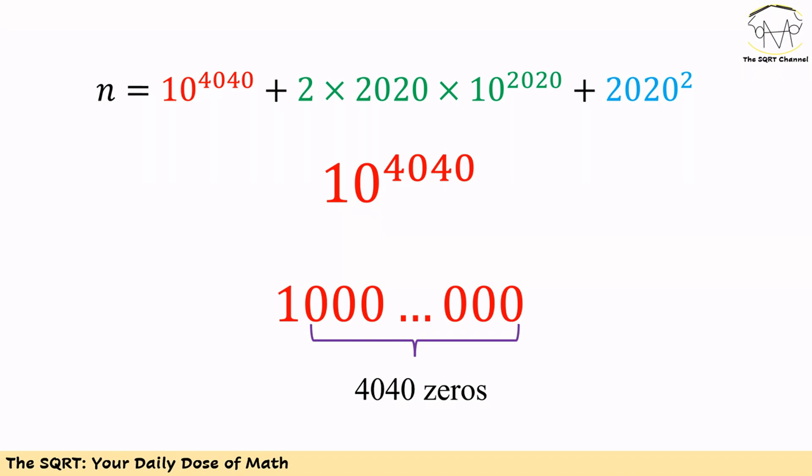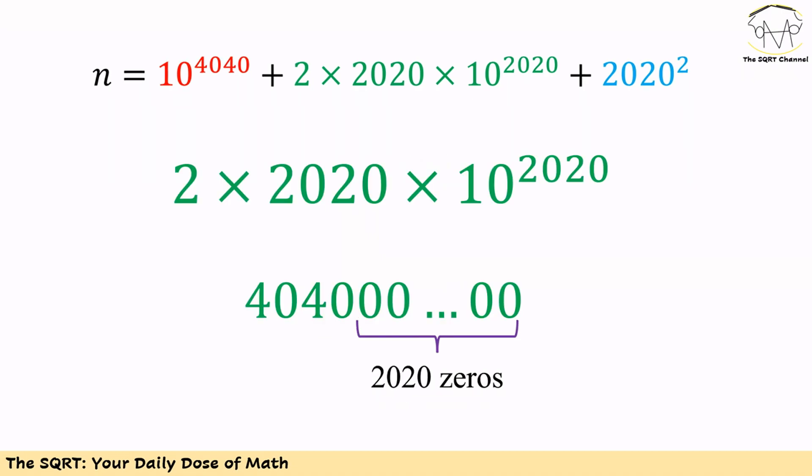For the second term, 10^2020 equals 1 followed by 2020 zeros. However, we have 2 × 2020 × 10^2020. Since 2 × 2020 = 4040, we get 404000...00 with 2020 zeros after 4040.